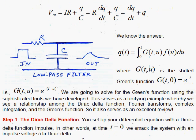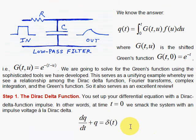Step 1: the Dirac Delta function. You take the differential equation here. No V_in. The V_in is special. It's going to be our smack, the spike of the Dirac Delta function.